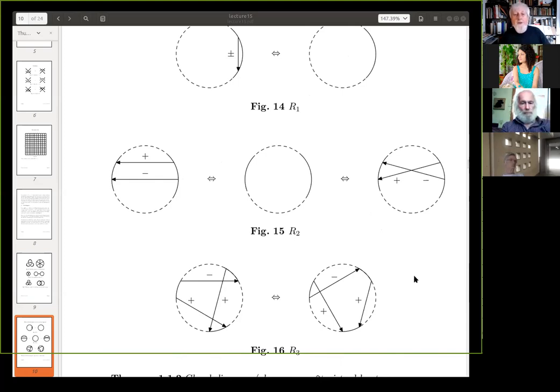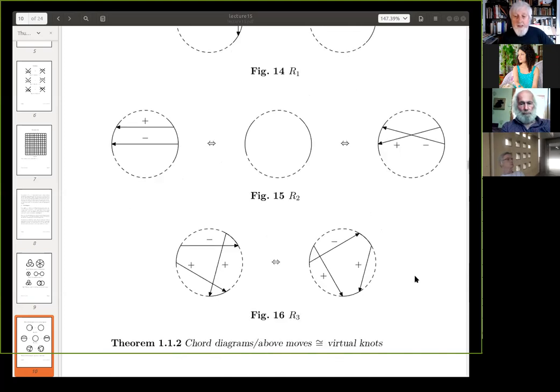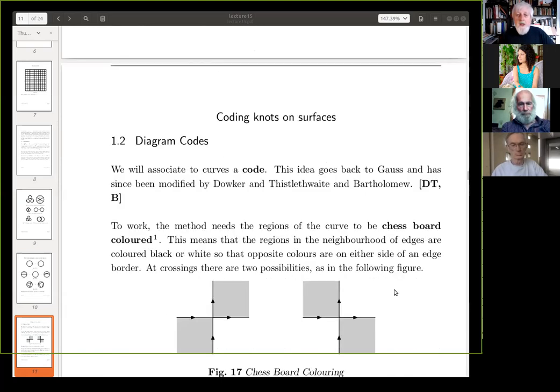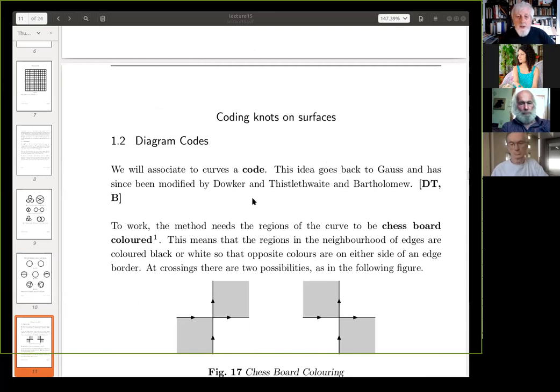So, Lou talked about the Gauss code, and there is, you can actually simplify this. So, I'll just talk briefly about how this can be simplified, and Dauker and Thistlethwaite and Bartholomew had a hand in this. Okay, so, the method needs the regions of the curve, so we've got a curve, let's just take a curve and forget about whether it's a, whether it represents a real or a virtual knot, just, just an immersed curve in the plane, okay.